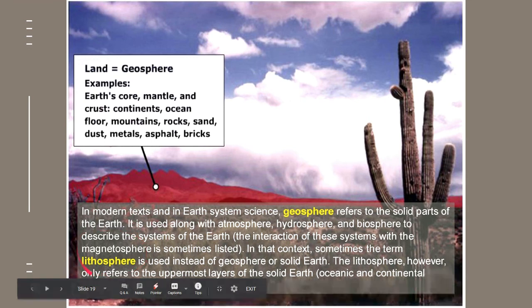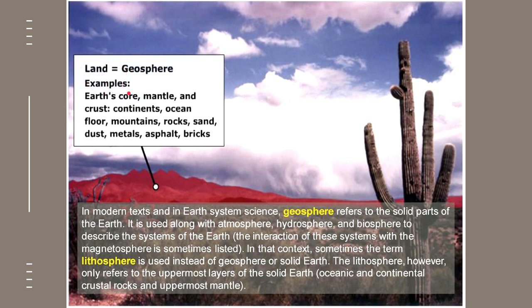The last subsystem is the geosphere. This refers to the solid parts of the Earth, also coined as the lithosphere — however, the lithosphere only refers to the uppermost layers of the Earth, including the oceanic and continental crust. The geosphere is the land part of the Earth. This includes the core, mantle, crust, continents, ocean floor, mountains, rocks, metals, asphalt, and bricks. So the geosphere is the solid part of the Earth.